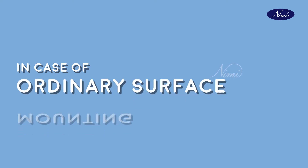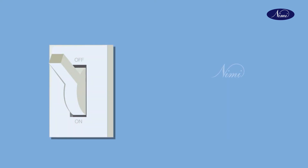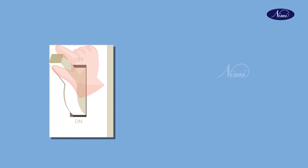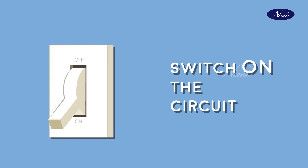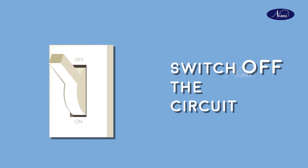In case of ordinary surface mounting switches, the knob control is also used. The knob of surface mounting switches should be pushed down to switch on the circuits, and when it is pushed up, the switch comes into off condition.